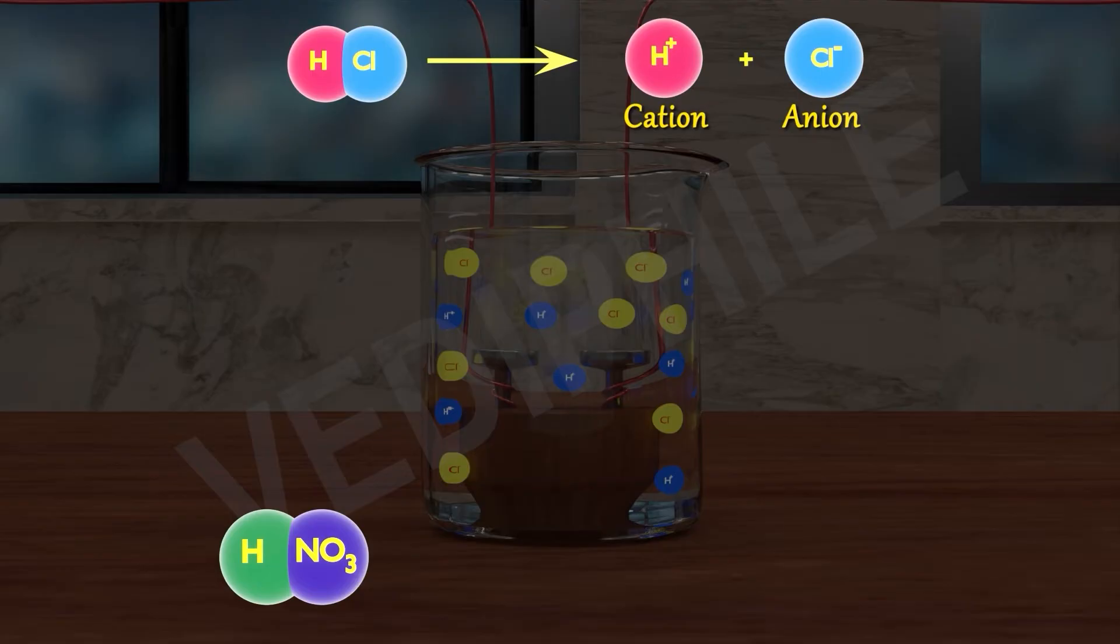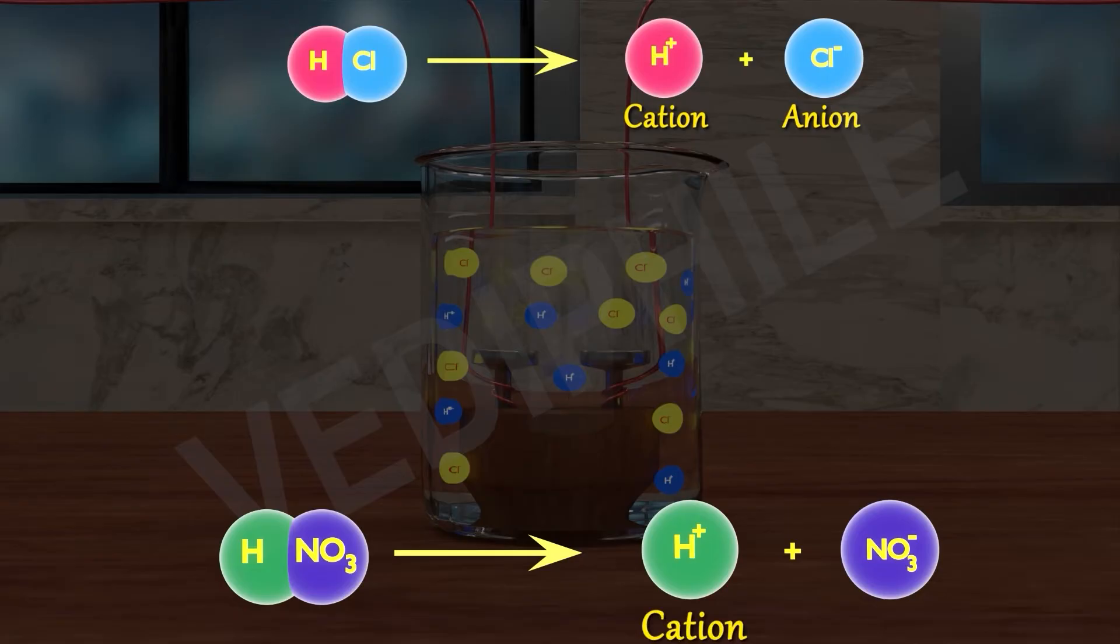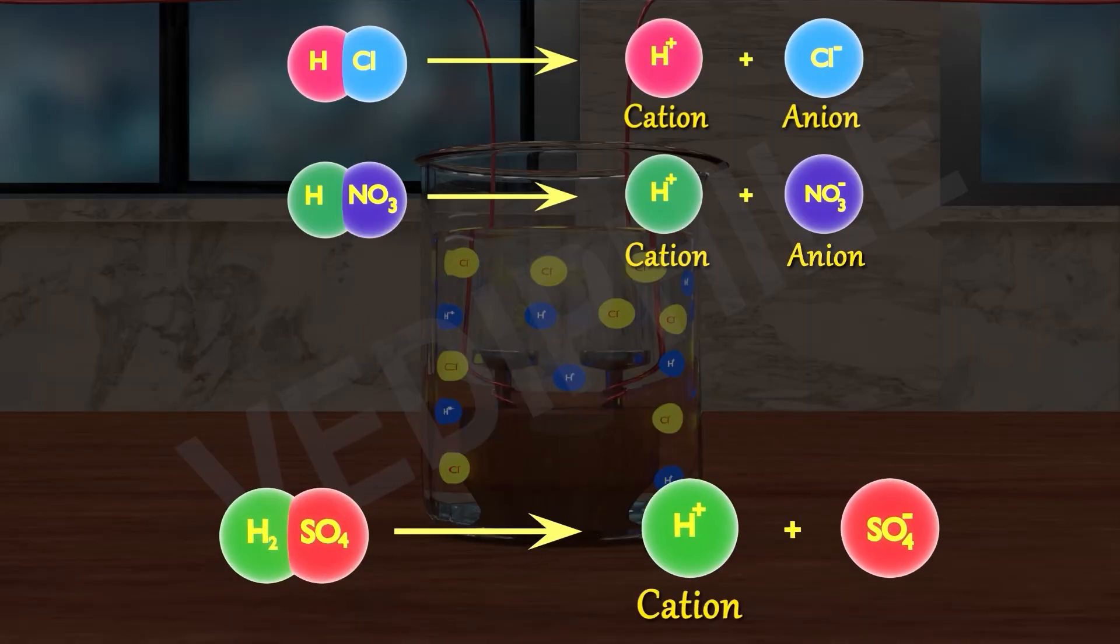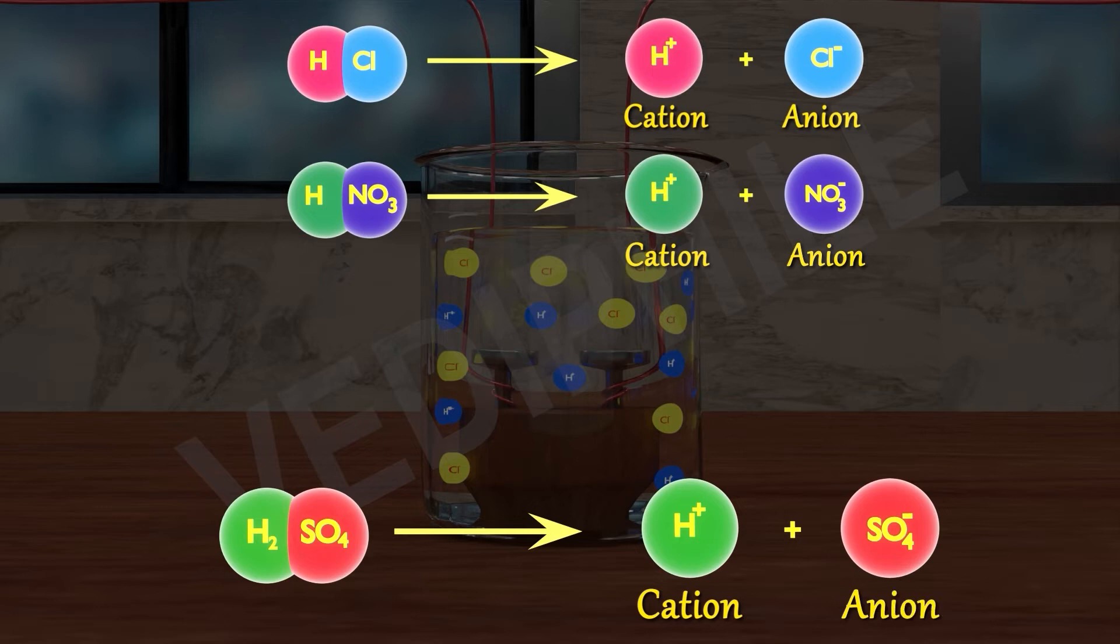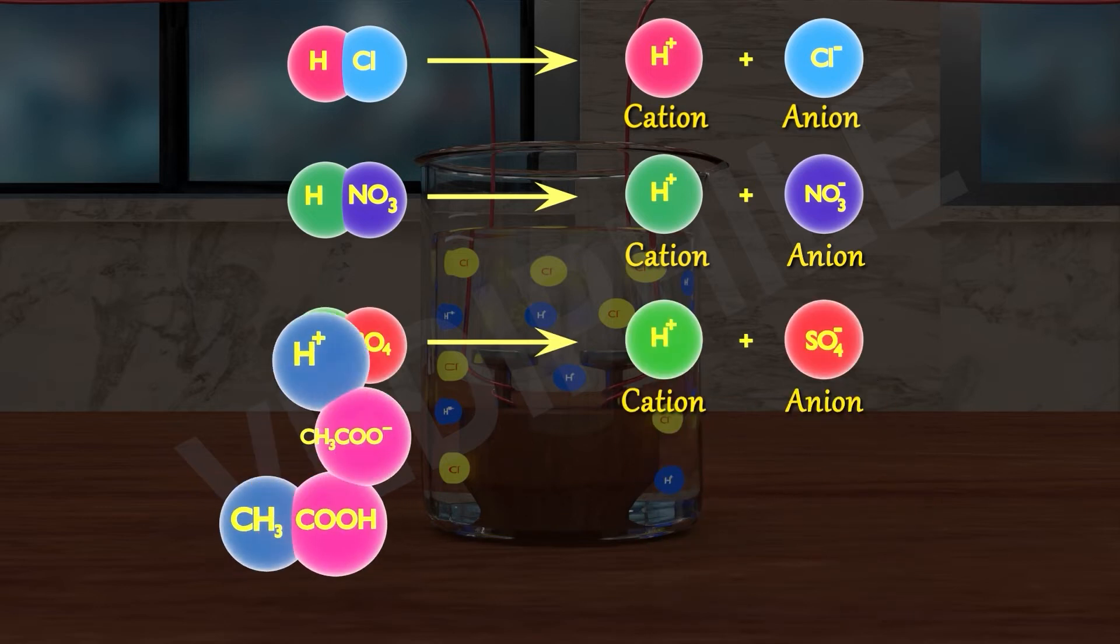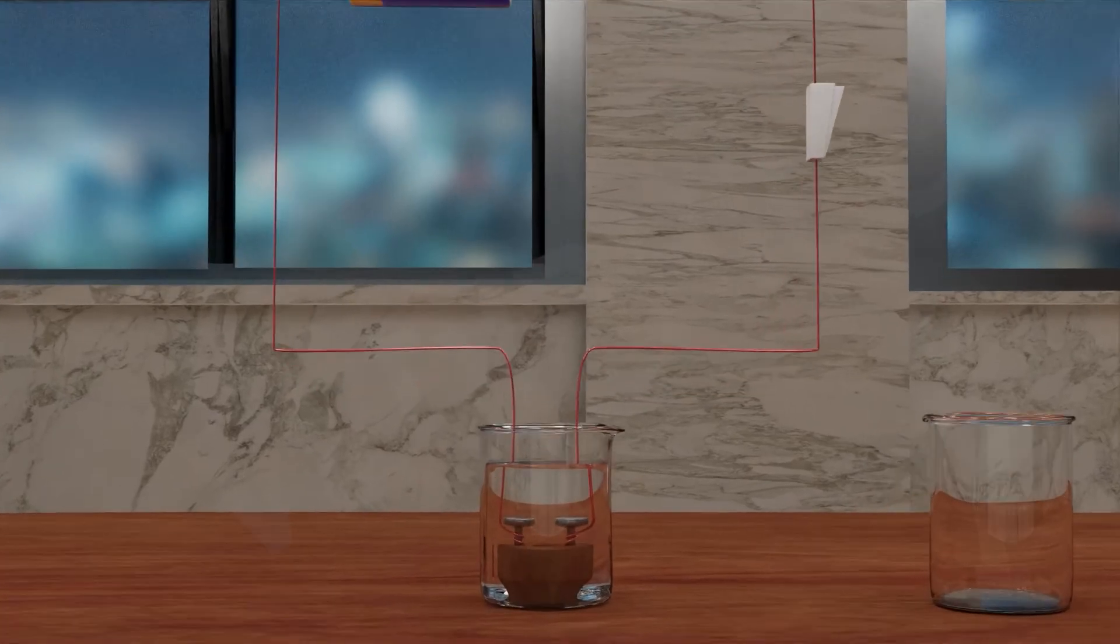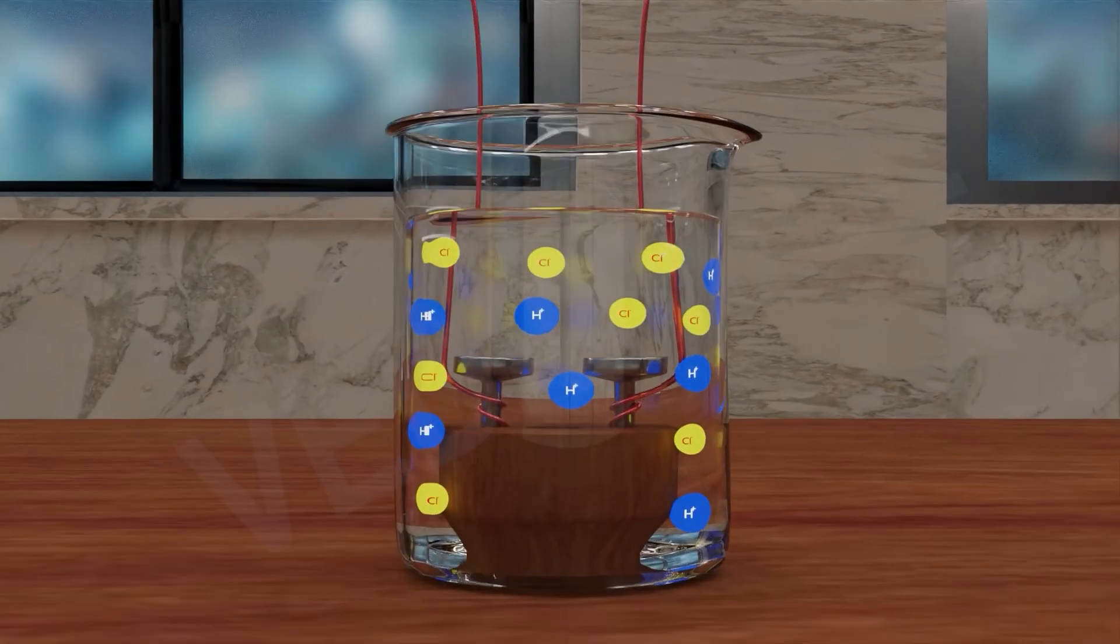What about HNO3? In HNO3, H plus is again a cation and NO3 minus is an anion. What about H2SO4? H plus is the cation here and SO4 is the anion. What about acetic acid? CH3COO minus is the anion here and H plus is the cation. So, the cation present in acids is H plus.